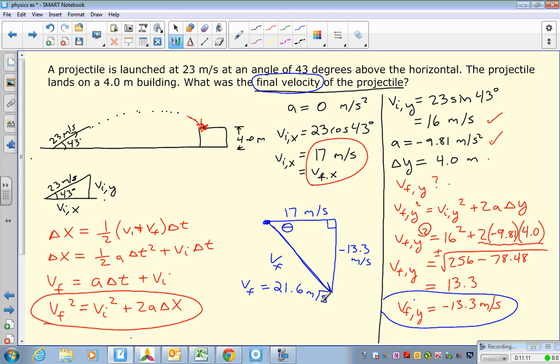Now, again, velocity is a vector. Vector has magnitude and direction. We just found the magnitude right now. We need to find the direction. Well, because it's the right triangle, we can use our tangent, which is opposite over adjacent. And so theta, my direction, is going to be the inverse tangent of the opposite, which is 13.3, you can ignore the negative when you plug it into tangent, over 17. And so that ends up being an angle of 38.0 degrees.